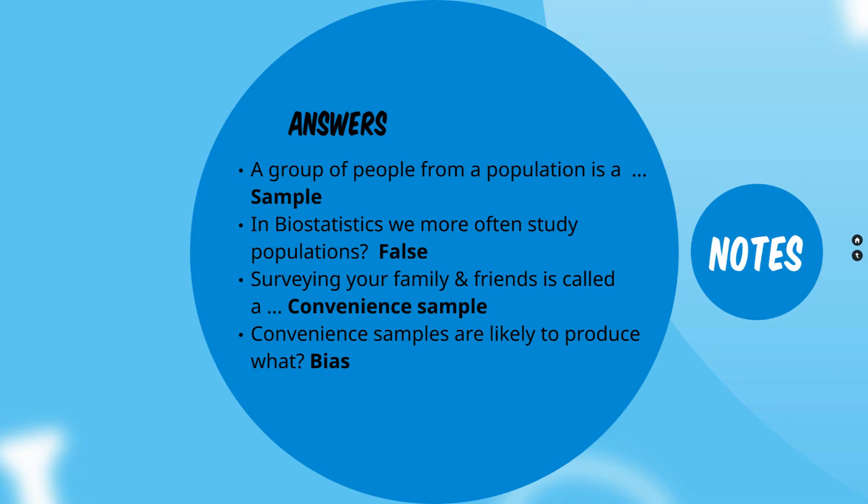Convenient samples are more likely to produce bias. Bias means that your results will not be representative of the population as a whole, because you selected them in such a manner that the sample is not fully representative — it is biased.